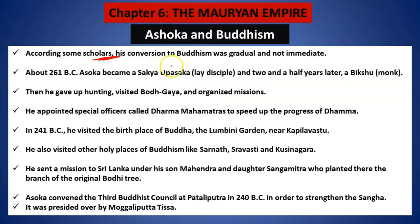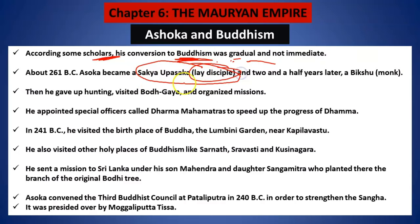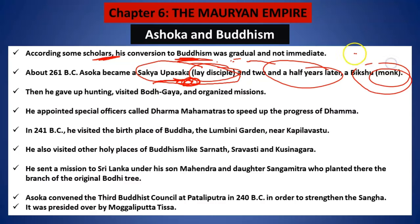According to some scholars, this is debatable — he did not convert to Buddhism immediately but gradually. First he became a lay disciple, acknowledging the Dhamma. After two and a half years, he became a monk. He gave up hunting also during that time, as kings used to go for hunting. He visited Bodhgaya and also visited many other places such as Lumbini Garden and Kapilavastu.